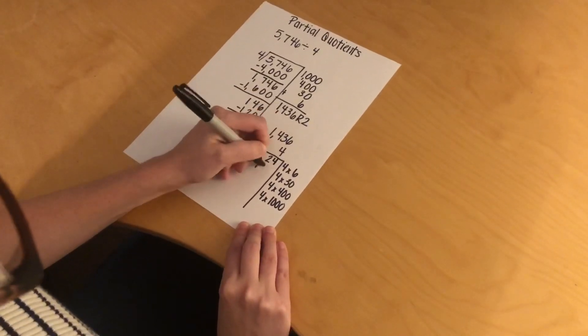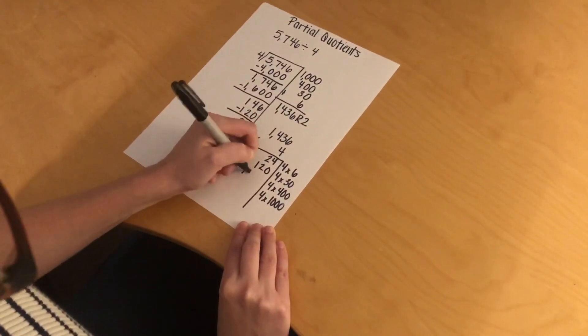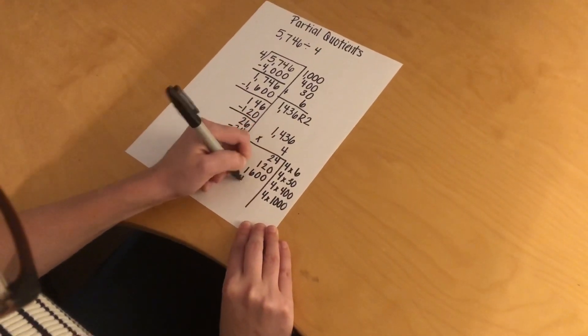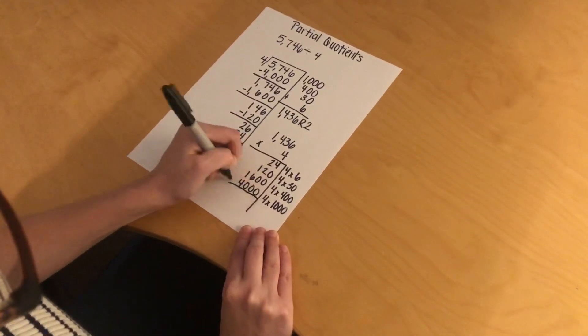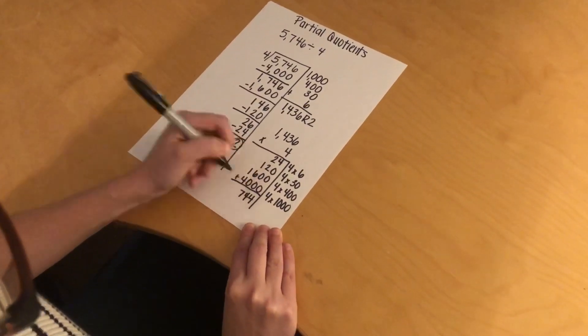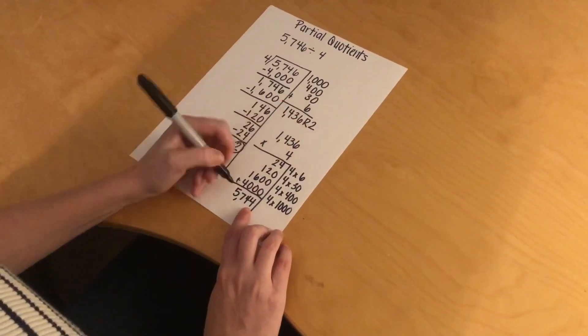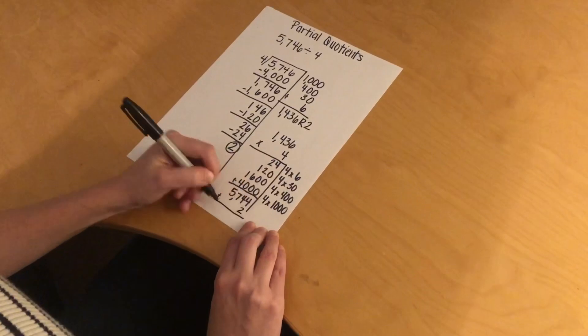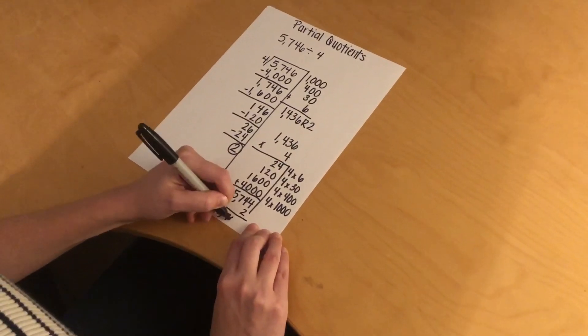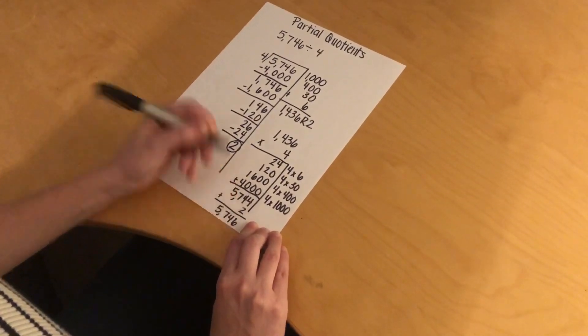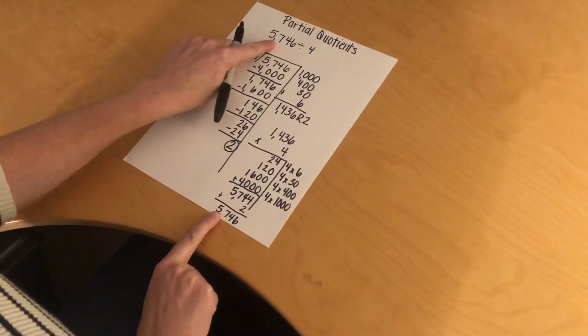And I get 24, 120, 1,600, 4,000. I add these up. I get 5,744, then I need to add my remainder of 2, and I get 5,746, which is what I started with.